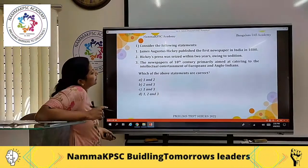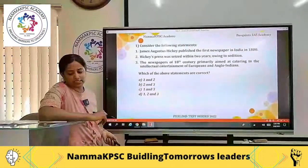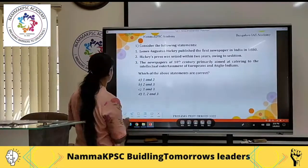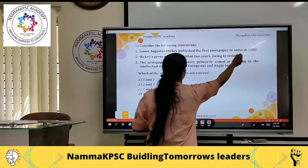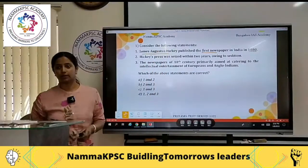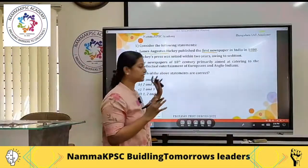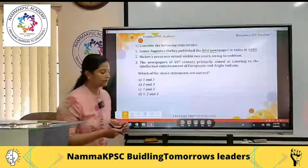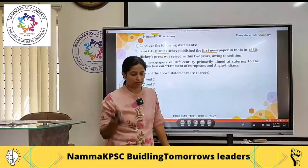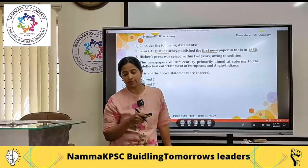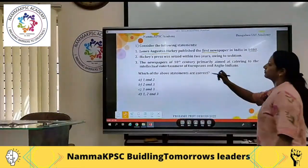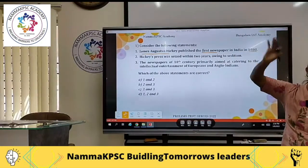James Augustus Hickey published the first newspaper in India in 1780. Now here, two complicated things: one is this year, another is 'first newspaper', and the other is the name. These are the facts we are going to deal with in this first statement. The first paper is also known as the Hickey Gazette. We know the first paper is the Bengal Gazette, also known as the Hickey Gazette.